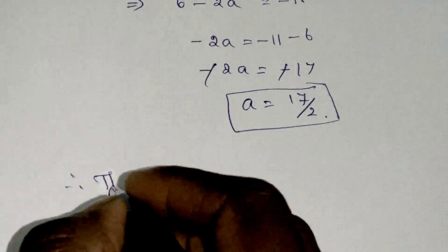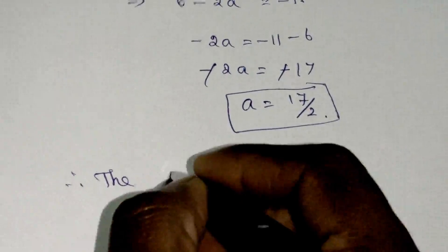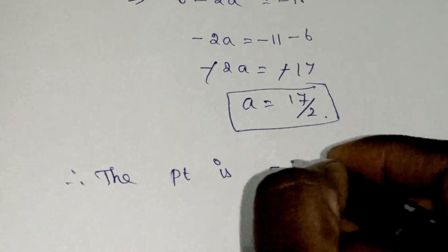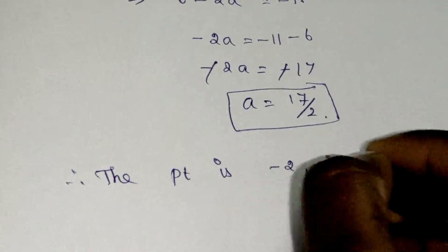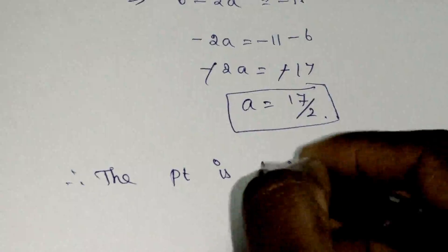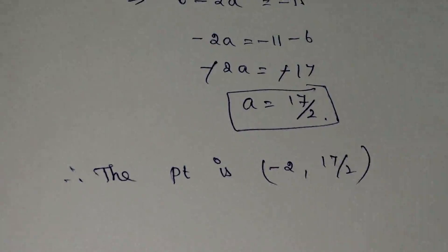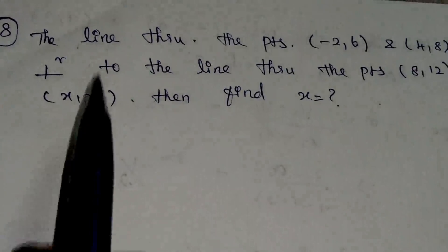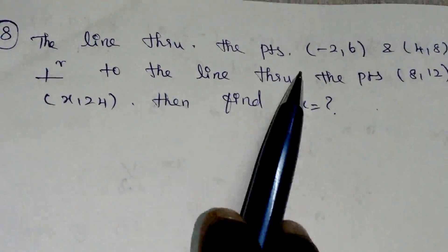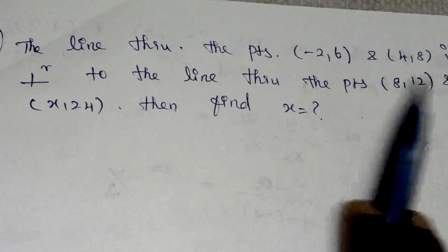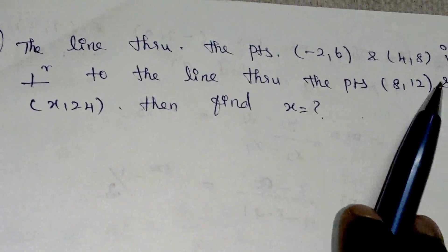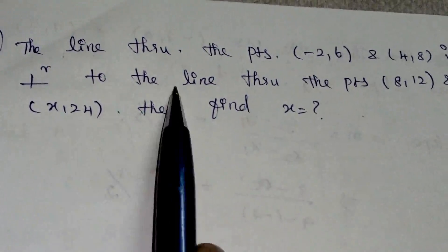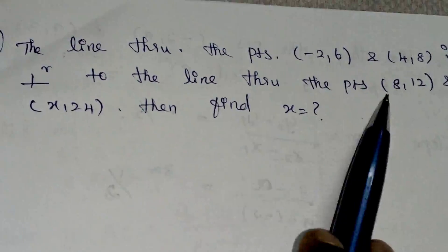Therefore A has the value 17 by 2, and the point is minus 2 comma 17 by 2. Now coming to problem 8. The line through the points — this line is perpendicular to the other line.